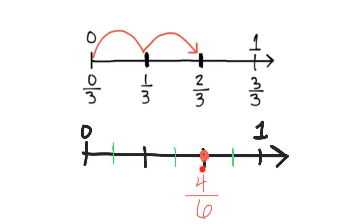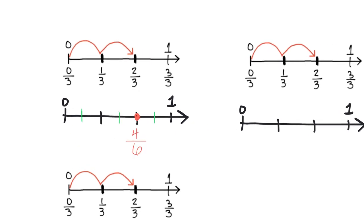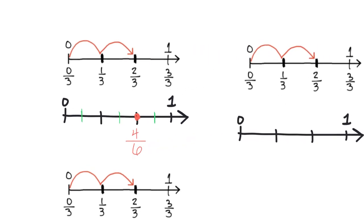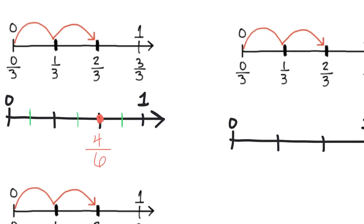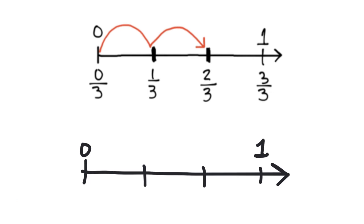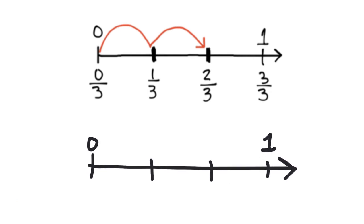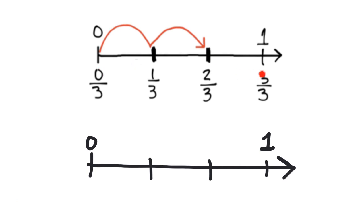We see that two thirds is the same thing as four sixths. So let's do the same thing and zoom in to figure out what would happen with the next copy. I've got the same thing here — it's still two thirds, and here's my identical copy.